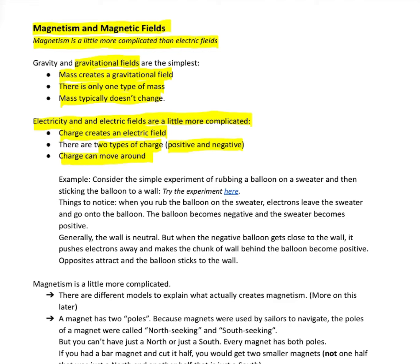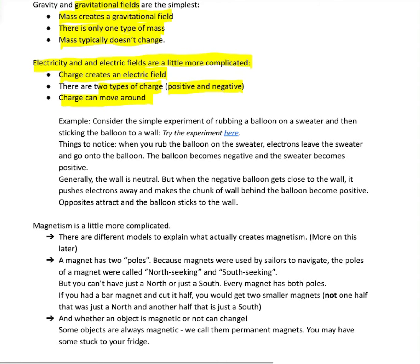We could have an object that was neutral all of a sudden become positive or negative. For example, there's a little simulation of it here. Check it out. That simple experiment of rubbing a balloon on your sweater and then sticking the balloon to a wall. The balloon was neutral, but when you rubbed it on the sweater, electrons leave the sweater and go to the balloon.